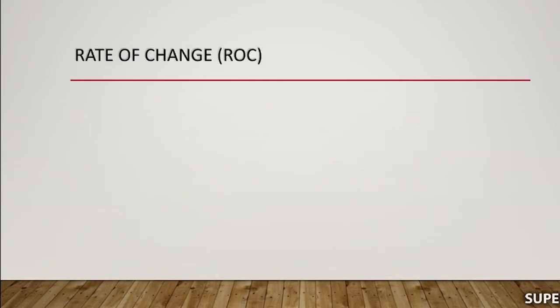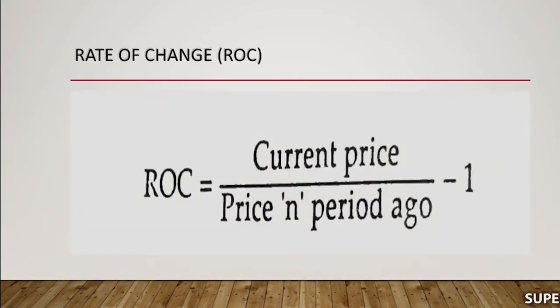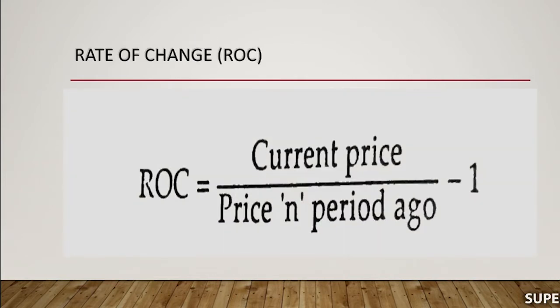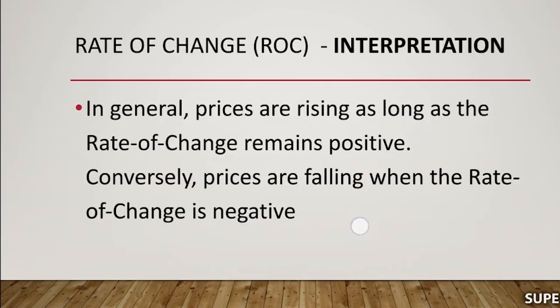The next concept is rate of change. The equation for calculating rate of change is: current price divided by price N periods ago, minus 1, expressed as a percentage. In general, prices are rising as long as the rate of change remains positive, and conversely, prices are falling when the rate of change is negative.